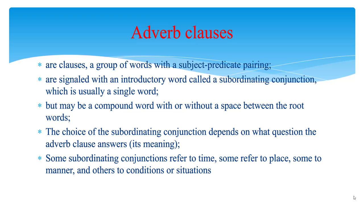Below are some subordinating conjunctions grouped by what type of adverb question they answer. When? After, when, until, soon, before, once, while, as soon as, whenever, by the time. How? If, whether or not, provided, in case, unless, even if, in the event. Why? Because, as, since, so, in order that, now that, inasmuch as. Where? Wherever, where.